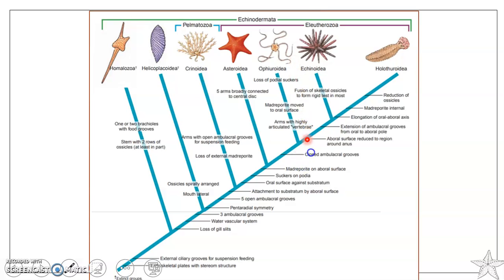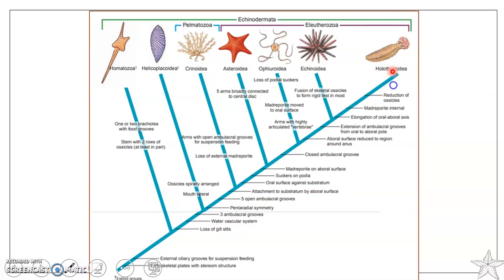The second stock developed an aboral surface reduced to the region around the anus, and the extension of ambulacral grooves from the oral to the aboral pole. From these ancestors, two groups evolved: one evolved into Echinoidea and the second into Holothuroidea. Echinoidea developed fusion of skeletal ossicles to form a rigid test, while Holothuroidea evolved from ancestors with an elongated oral-aboral axis, internal madreporite, and reduced ossicles.